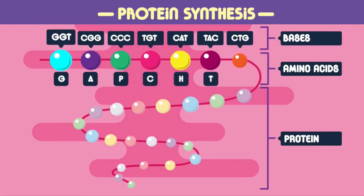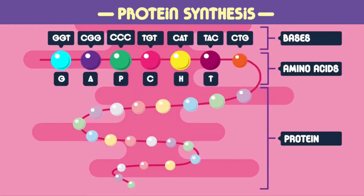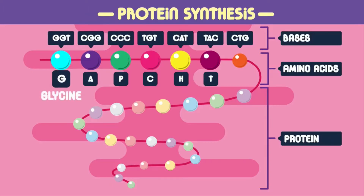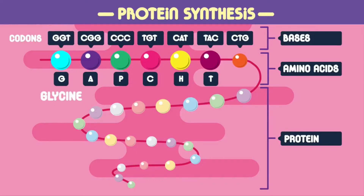A set of three bases in the DNA molecule codes for a particular amino acid. GGT, for example, codes for the amino acid glycine. The three base codes are known as codons. So GGT is a codon for glycine.